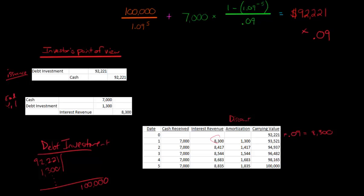Here's the thing. This interest revenue, it's not $8,300 every year. It's a different amount every year. And why is that? Because this carrying value, $92,221, we add that amount, that $1,300, now we've got a new carrying value. This $93,521, that is $92,221 plus $1,300. So the amount of that discount that we amortized, we increase that.